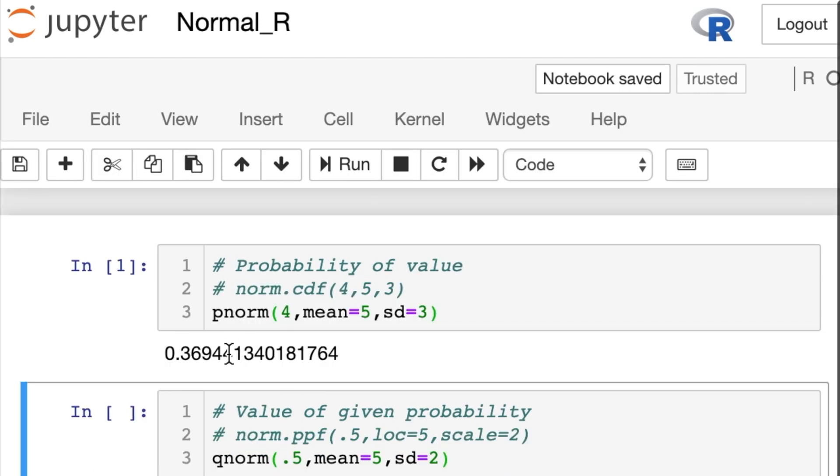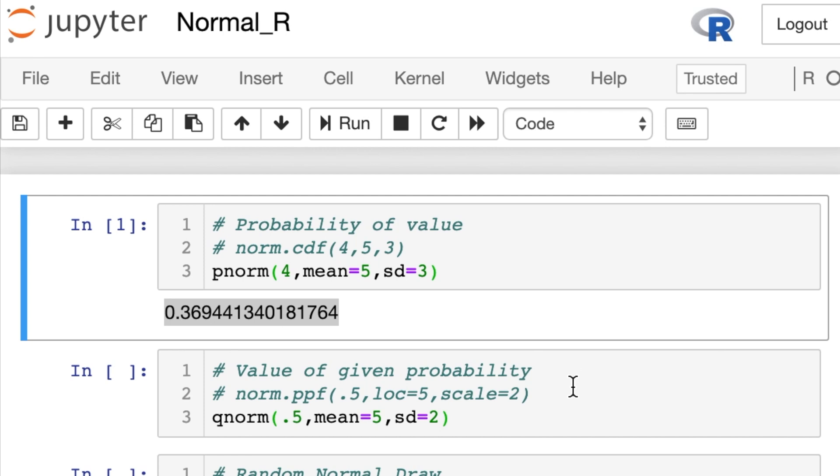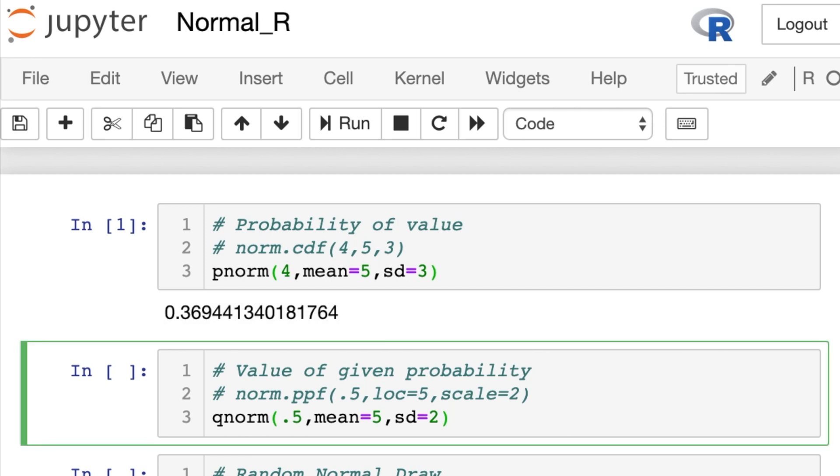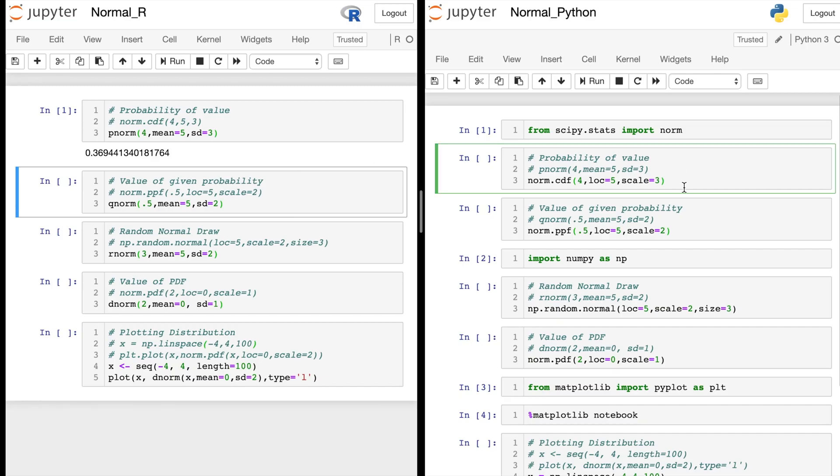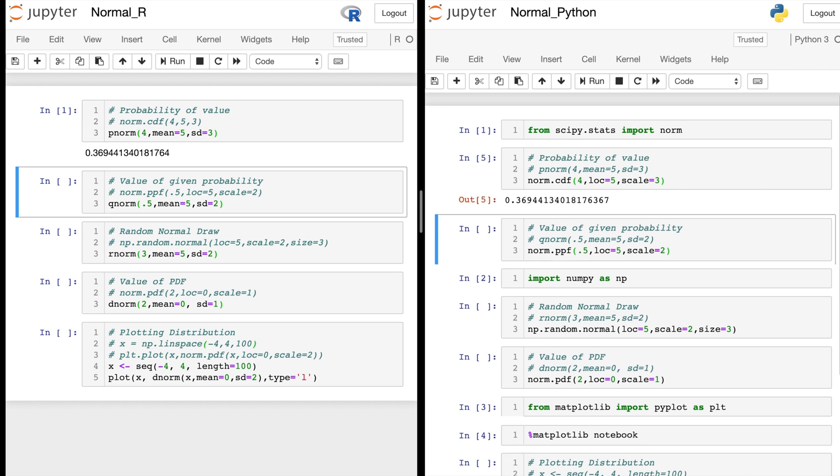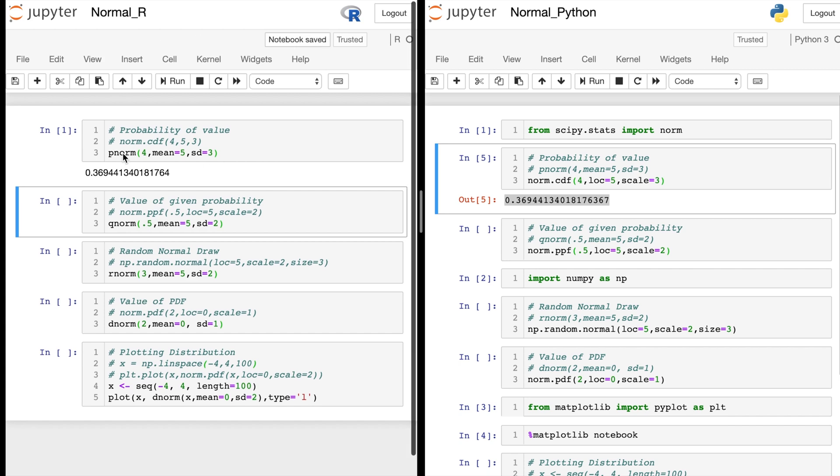So norm.cdf, you plug in 4, the loc, which is your mean, and scale, which is your standard deviation. So let's go ahead and run that in our Python side. And you see we get this same number with the exception of a few more decimal places in Python.